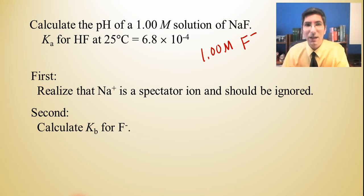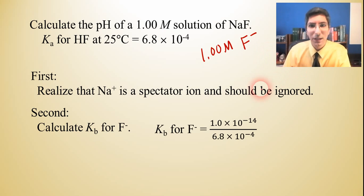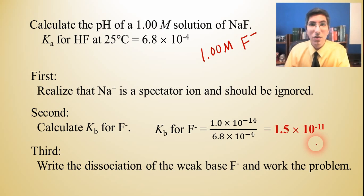Now, the second thing we need to realize is that we were given a Ka for hydrofluoric acid. And that's very nice, but we're not dealing with hydrofluoric acid, are we? We're dealing with its conjugate base, the fluoride ion. So we have to use that equation we just talked about to figure out what the Kb is here. So we're going to take 1 times 10 to the minus 14th and divide it by the Ka value that was given to us. And so we can figure out that the Kb of fluoride is 1.5 times 10 to the negative 11th. So we have our Kb value for the weak base.